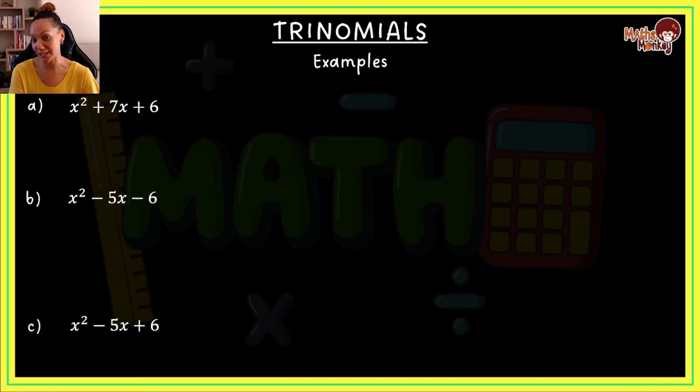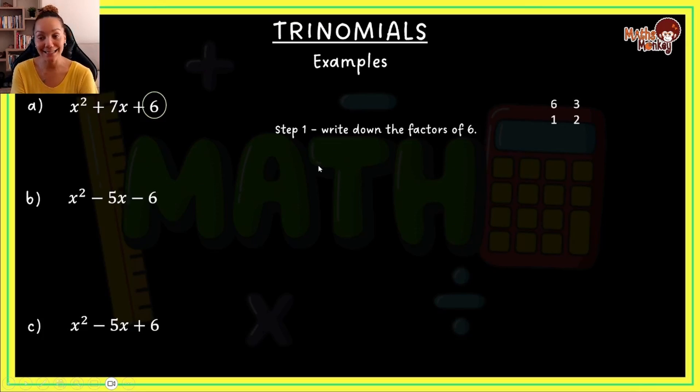Let's start with these three examples. I'm going to show you step by step so that when you are actually doing it, you follow those same steps. I've got x squared plus 7x plus 6. The first step is to write down the factors of 6. In other words, write down the factors of the constant. So we write down the factors of 6. Our factors of 6 is 1 and 6 and 3 and 2.